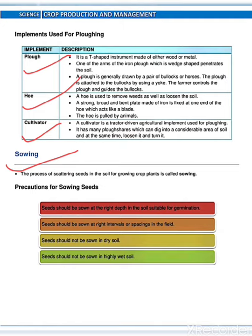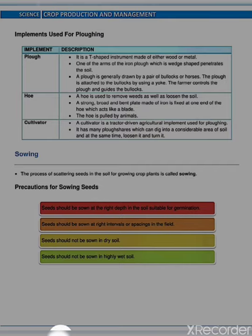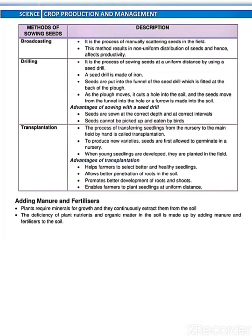Next one is sowing. The process of scattering seeds in the soil for growing crop plants is called sowing. Here some precautions for sowing seeds are given. Methods of sowing seeds: Broadcasting — it is the process of manually scattering seeds in the field. In this method, distribution of seeds is non-uniform. Next one is drilling — it is the process of sowing seeds at a uniform distance by using a seed drill.